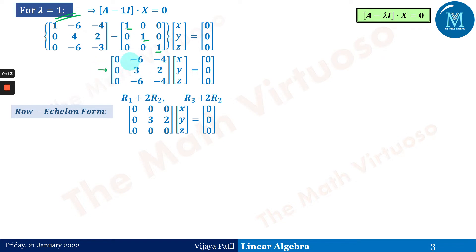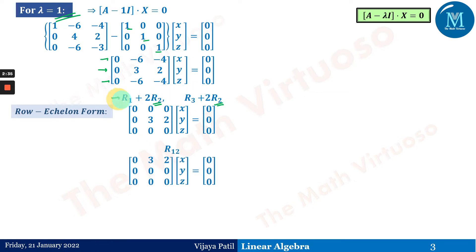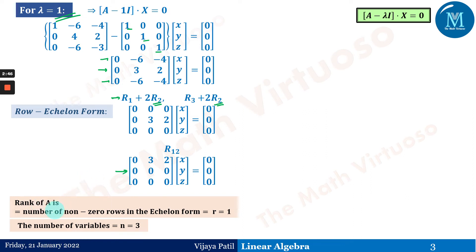To convert to echelon form, we use row R2 to make R1 and R3 zero in one step — since we can see the rows are proportional (e.g., 3, 2 and −6, −4). After applying the transformation and shifting R1, we get the echelon form. The rank r = 1, as there is only one non-zero row: [0, 3, 2].